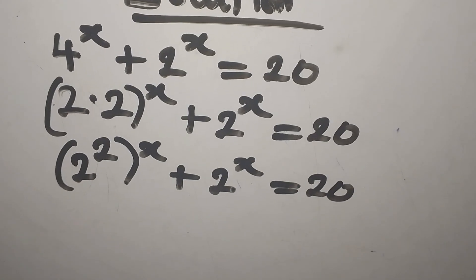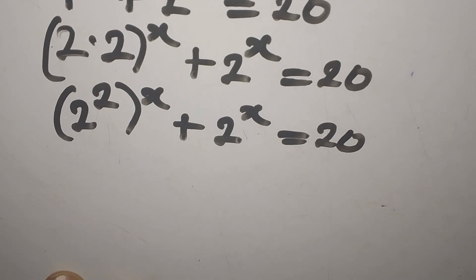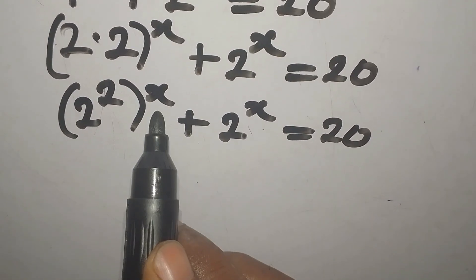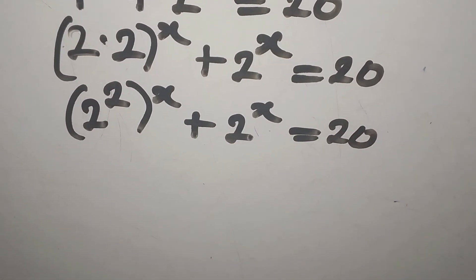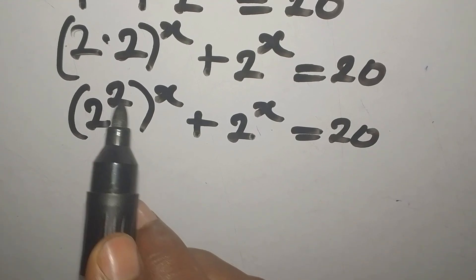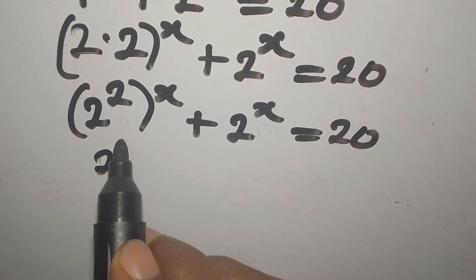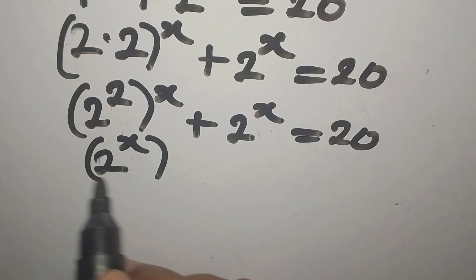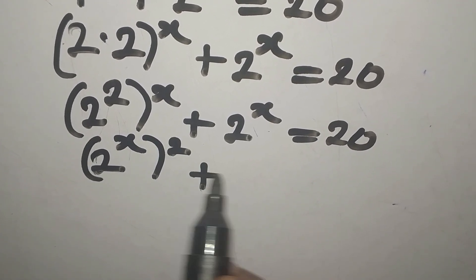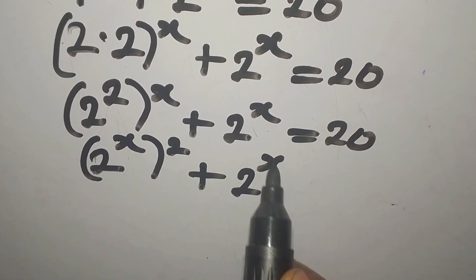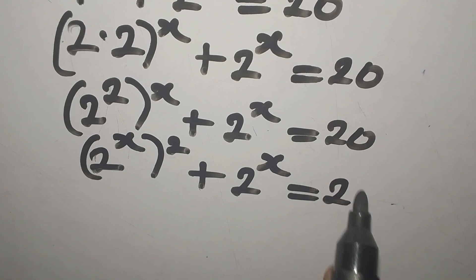Now what do I do to this? I'm going to change the position of the power here. This can come in and 2 can go out. So we're going to have 2 to the power of x to the power of 2, then plus 2 to the power of x equals 20.